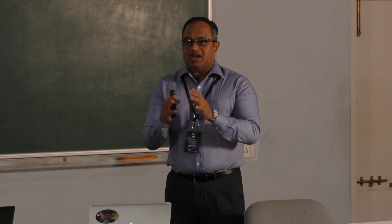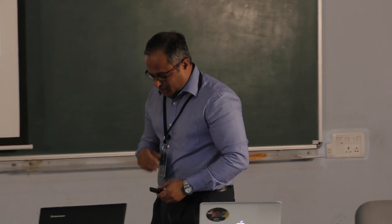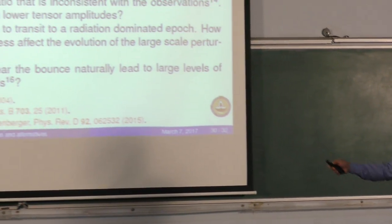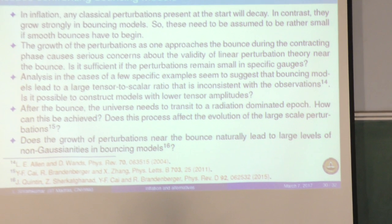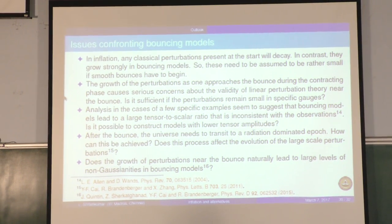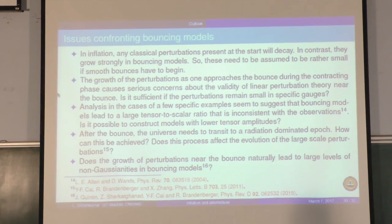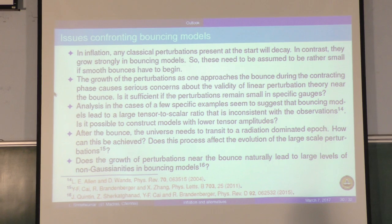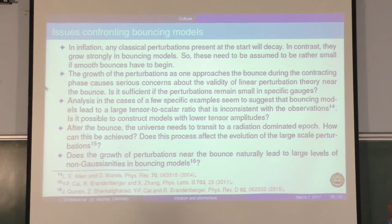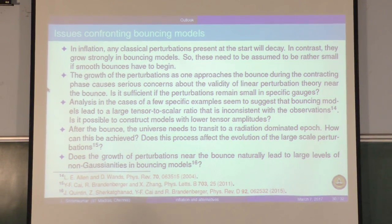There are many, many problems which plague bouncing scenarios. The first is that in inflation, if you have classical perturbations on sub-Hubble scales, as the universe expands through an accelerated phase they will decay. But that will not happen in a contraction: you just solve the Mukhanov-Sasaki equation in a contracting universe and they will rapidly grow. They'll be fairly large at the bounce. In order to overcome this difficulty, you have to have a lot of fine-tuning involved.